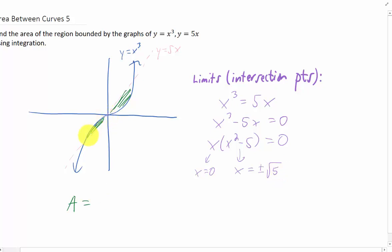So the area between these two curves is going to be represented by two integrals, one from negative root 5 to 0, and the other from 0 to the square root of 5. In the first region where the x values vary from negative root 5 to 0, you'll notice that the top function is x cubed, and the bottom function is 5x.